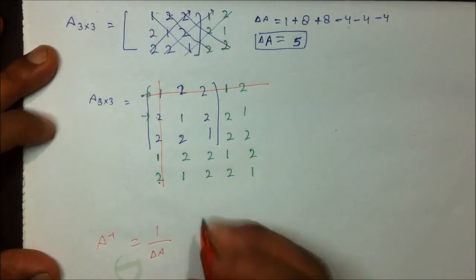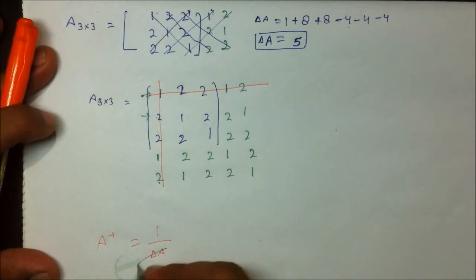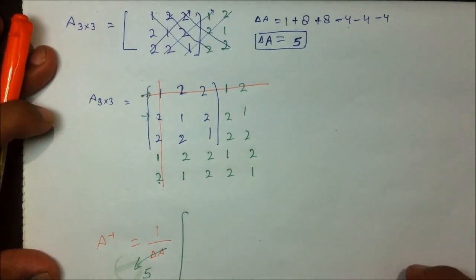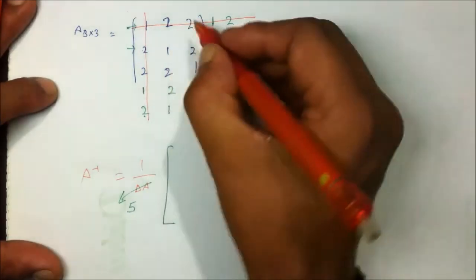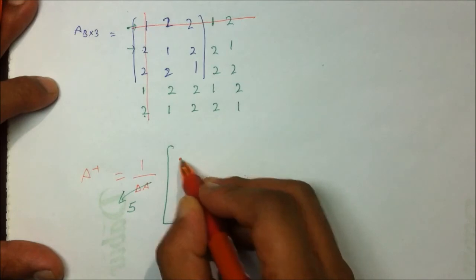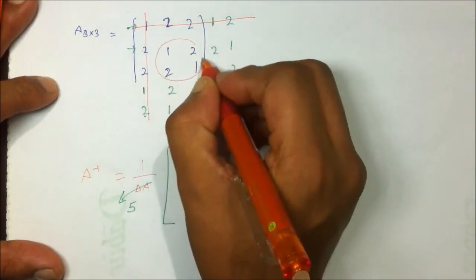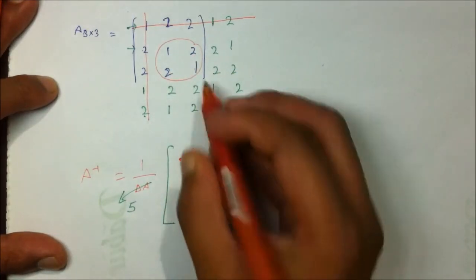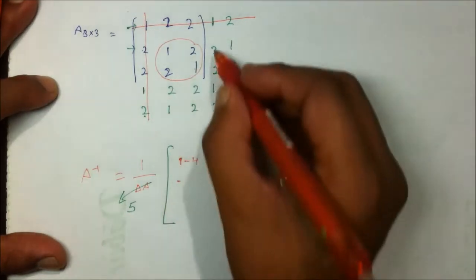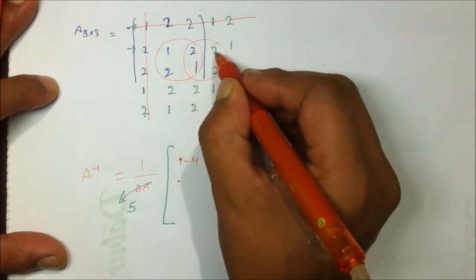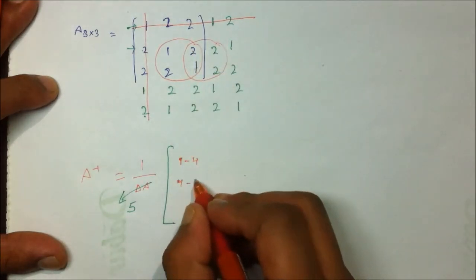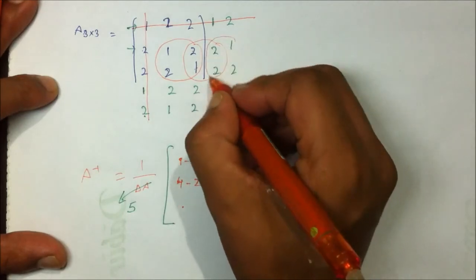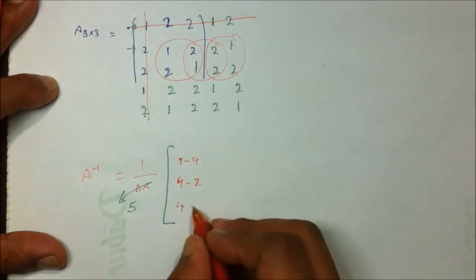Now I figure out each element of the A inverse matrix. The first element comes from the 2×2 sub-block: 1×1 − 2×2 = 1 − 4 = −3. The second element: 2×2 − 2×1 = 4 − 2 = 2. The third element: 2×2 − 2×2 = 4 − 2 = 2.